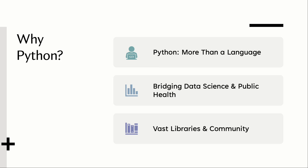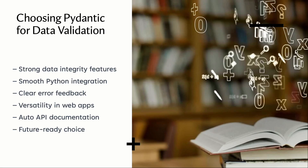We chose Python for our data validation endeavors. Python is more than just a programming language; it's a versatile tool that seamlessly bridges the realm of data science and public health. Its capabilities are further enhanced by a plethora of specialized libraries, each designed to cater to specific applications. Moreover, the extensive Python community continually contributes to its growth, fostering innovation and collaboration. We opted for Pydantic for our data validation not only for its robust capabilities in ensuring data integrity but also for its versatility in web applications. Pydantic seamlessly integrates with Python's type annotations, offering precise validation for complex data structures. Its detailed error messages guide us to data discrepancies ensuring clarity. Its adaptability in web and API development positions it as a forward-thinking choice. In summary, Pydantic's structured approach guarantees our data sets' accuracy while also paving the way for future web-based endeavors.